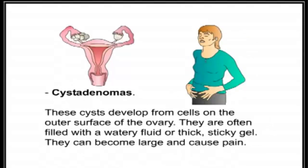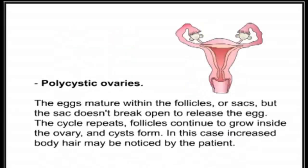Cystadenomas: these cysts develop from cells on the outer surface of the ovary. They are often filled with a watery fluid or thick sticky gel, and they can become large and cause pain.